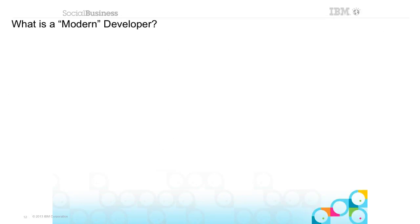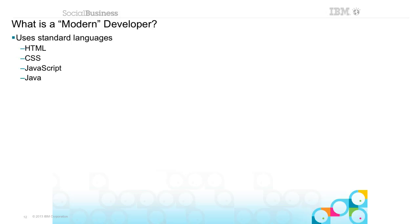So let's look at this term — a modern developer. What is a modern developer? To me, a modern developer uses standard languages that everyone else does: HTML, CSS, JavaScript, Java. They use them everywhere. It's not like you're forced to use a formula in this area and that's all you can use there.